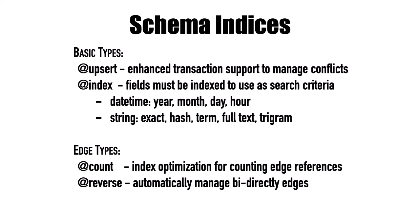Let's talk about schema indices. You may have seen annotations like @upsert, @index, @count, and @reverse. The @upsert annotation is an enhancement to transaction support to manage conflicts — if there are multiple concurrent requests trying to manipulate the same value, it handles that for you. The @index annotation exposes your fields as search criteria — if you don't index it, you cannot use it as a filter, though you can still return the data; you just can't search by it.